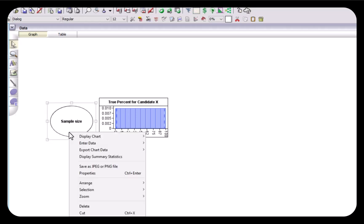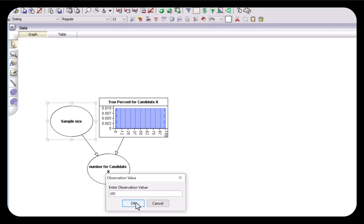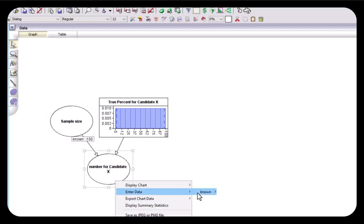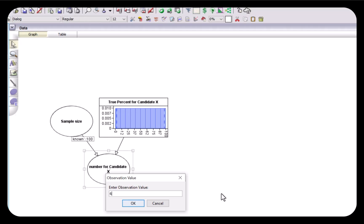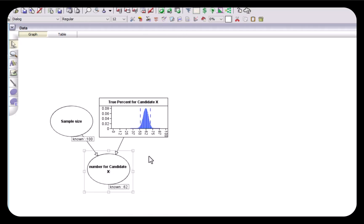For example, if the sample size is let's say 100 and the number who support candidate X in that sample is 62, then when we run the model we get an updated posterior probability distribution for the true percentage for candidate X which has a mean just under 62 because we started with a prior of 0.5, so that's why it takes more data to shift it to the sample mean.